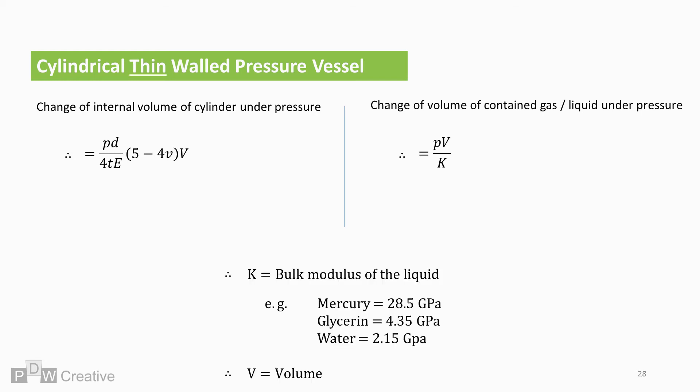Let's quickly identify the new inputs. So K is the bulk modulus of the liquid. I've listed a few examples. So we have mercury at 28.5 GPa, glycerin at 4.35 GPa, water at 2.15 GPa. And capital V is the volume.